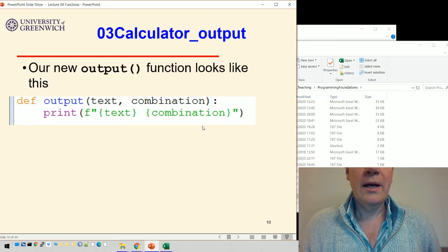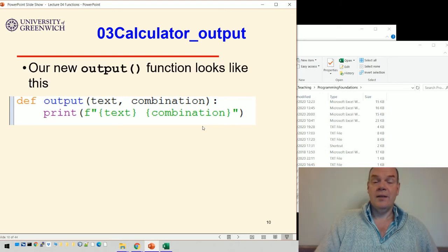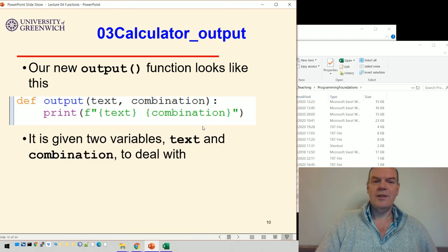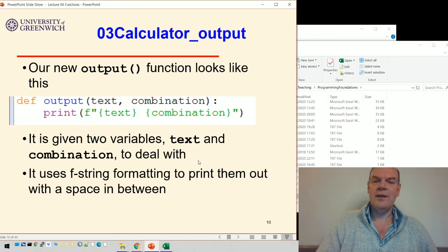Our new output function looks like this. We give it two variables to deal with, text and combination, and it uses f-string formatting to print them out with a space in between. It's not doing very much, it's just a simple example.